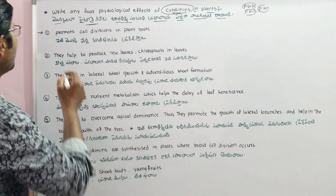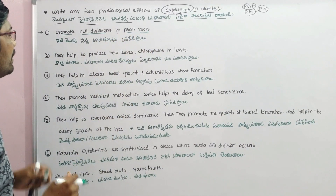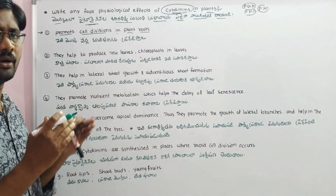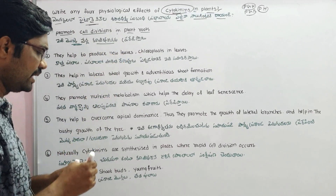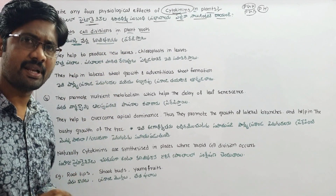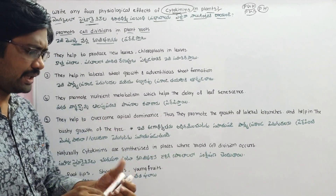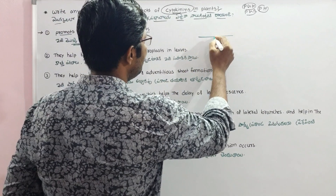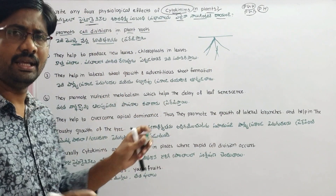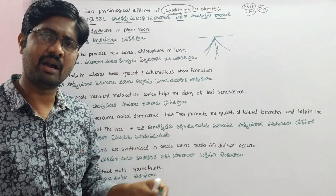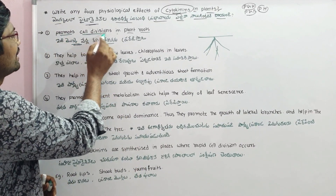The first physiological effect of cytokinins is that they promote cell divisions in plant fruits. Cytokinins are important because they promote cell division. When we talk about cytokinins, the key function is promoting cell division in plant tissues.